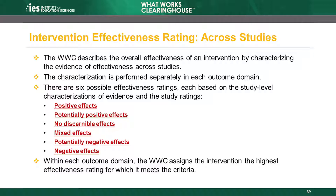We will not go into detail about the criteria in this module. The Procedures Handbook describes the criteria for each of the six ratings. The criteria are based on the study-level characterizations of evidence within outcome domains as well as the study ratings. For example, for an intervention to receive a rating of positive effects in an outcome domain, two or more studies must show statistically significant positive effects, at least one of which is rated meets WWC group design standards without reservations, and no studies can show statistically significant or substantively important negative effects.